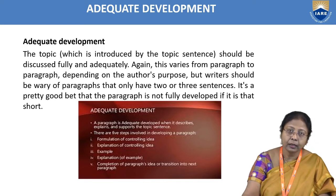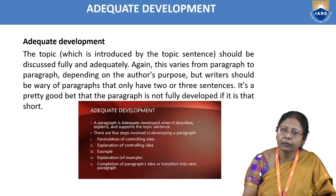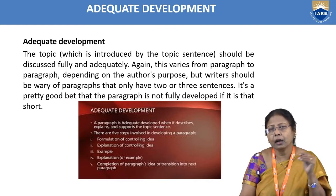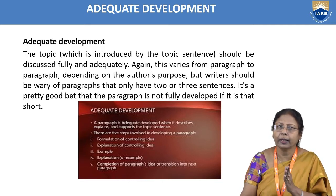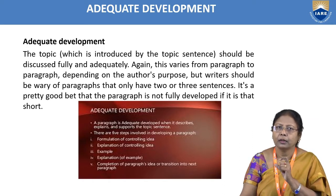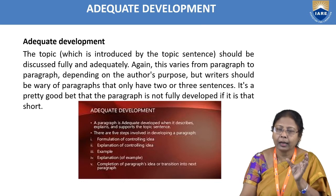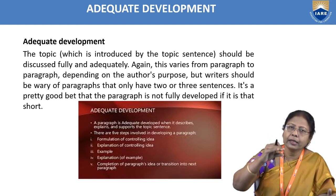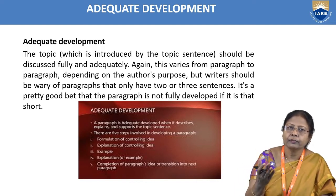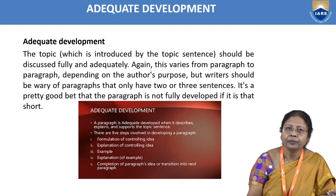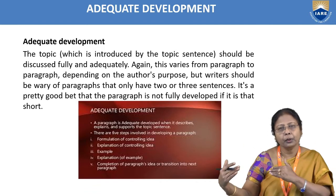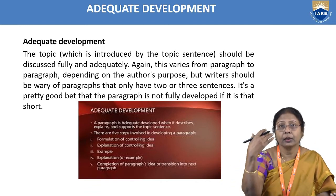To achieve adequate development, follow these steps: first, formulation of the controlling idea — the main idea of the paragraph; second, expansion of the controlling idea with clear explanation; third, use of examples and explanation of those examples; fourth, completion of the paragraph's idea; and fifth, transition into the next paragraph. Following these steps helps develop ideas adequately.